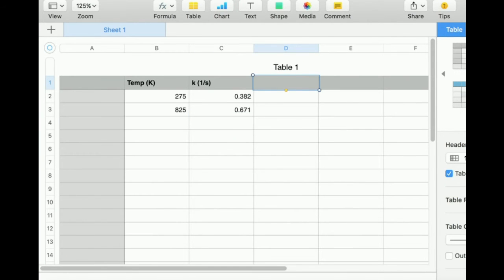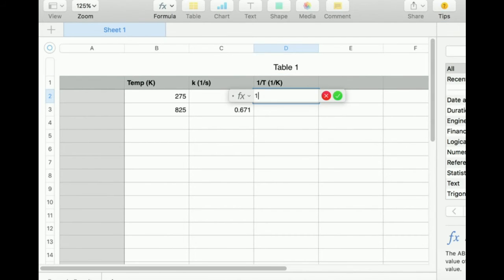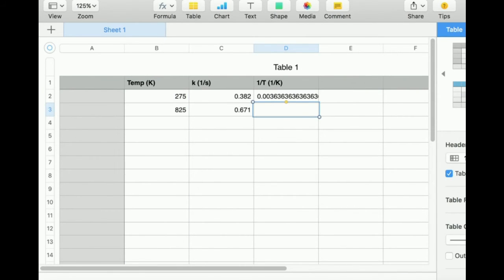Let me take, this is going to be 1 over temperature, which means my units are going to be 1 over Kelvin. So let's take the reciprocal. I'm going to take 1 divided by cell B2, and then I'm just going to drag this down.